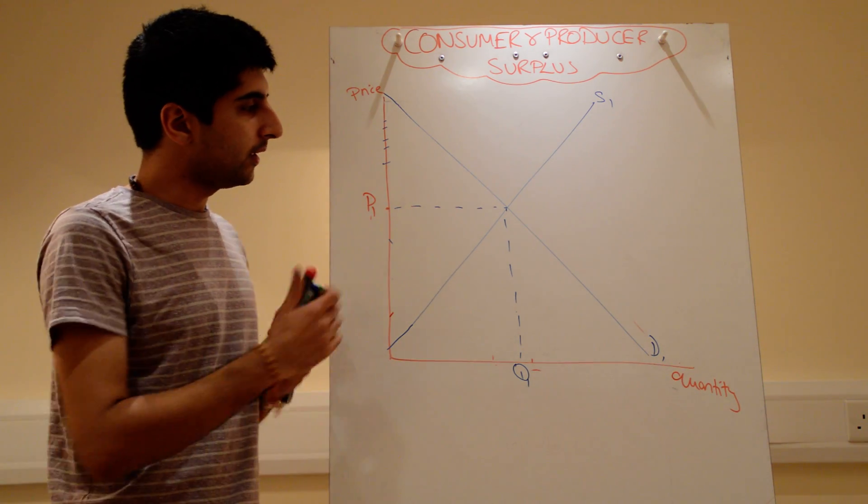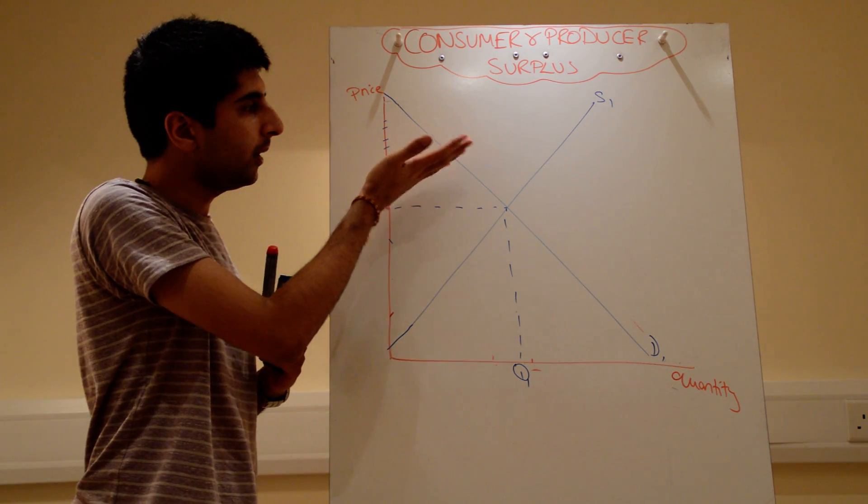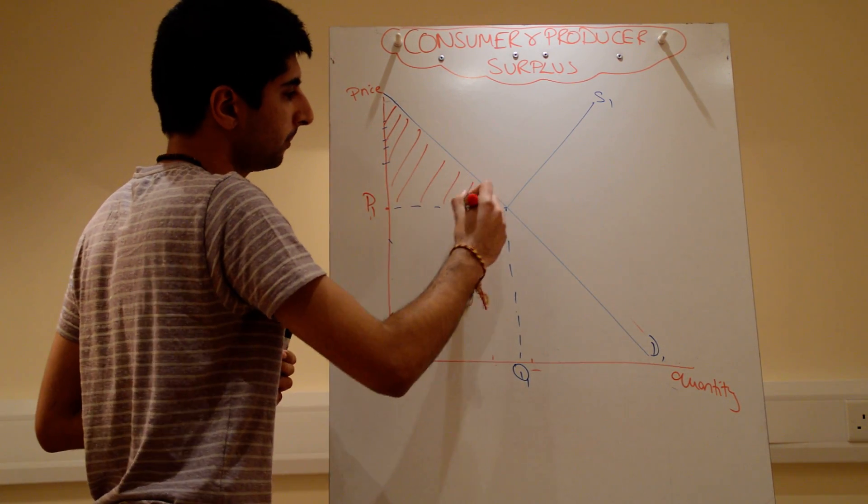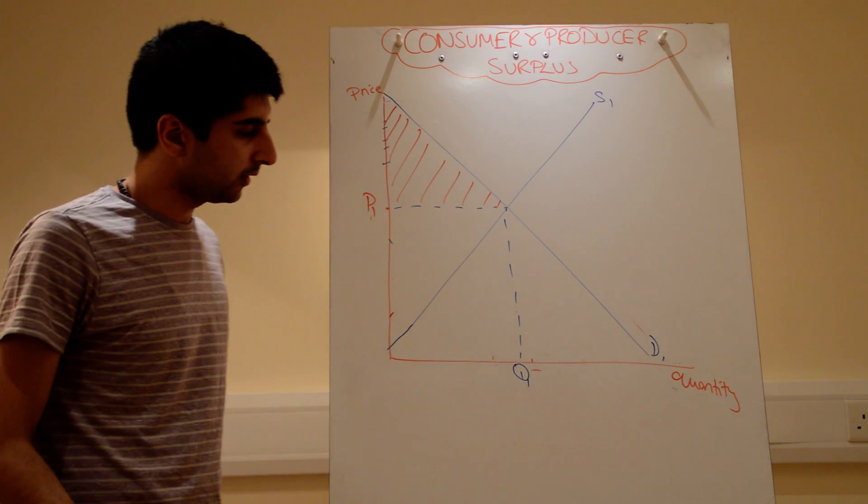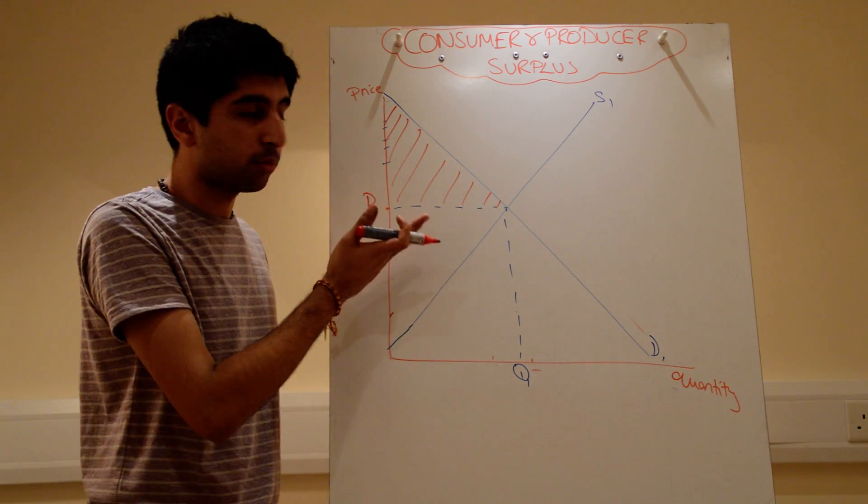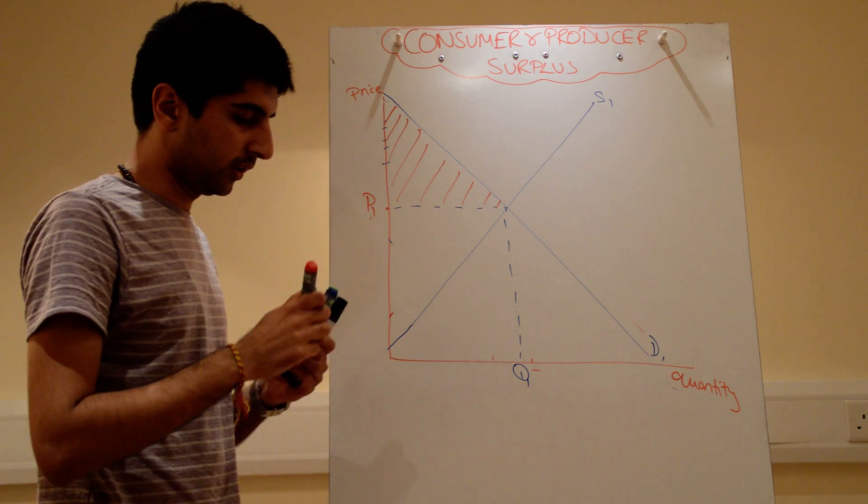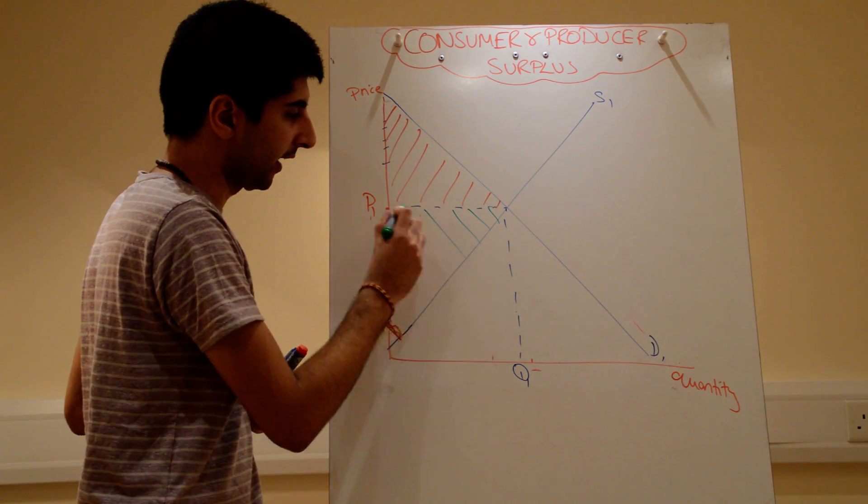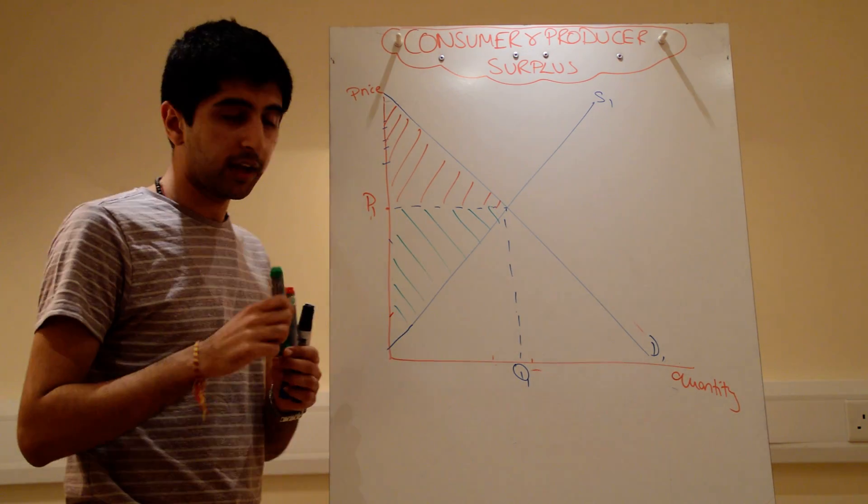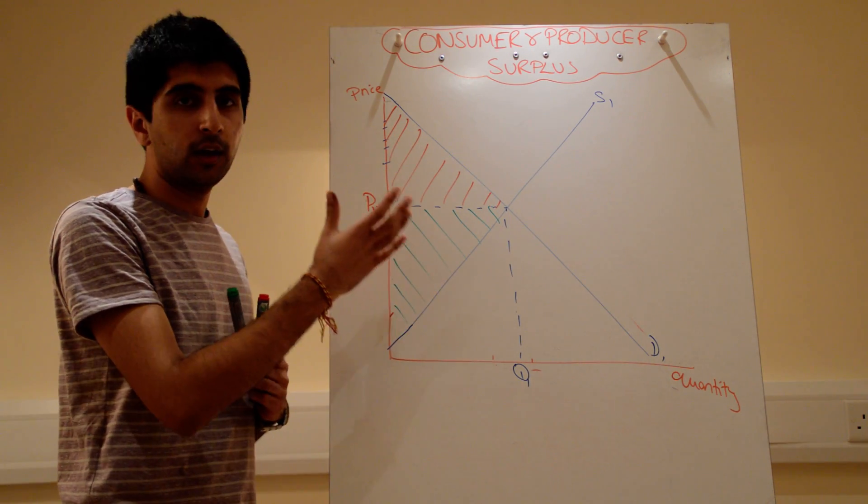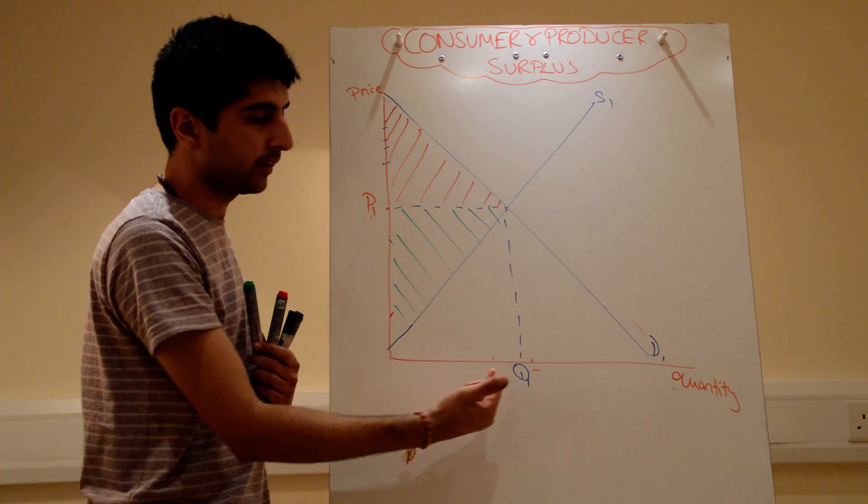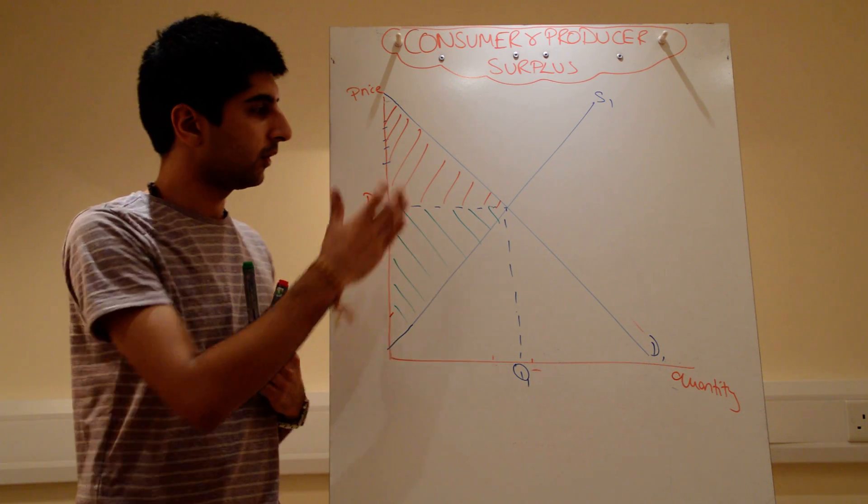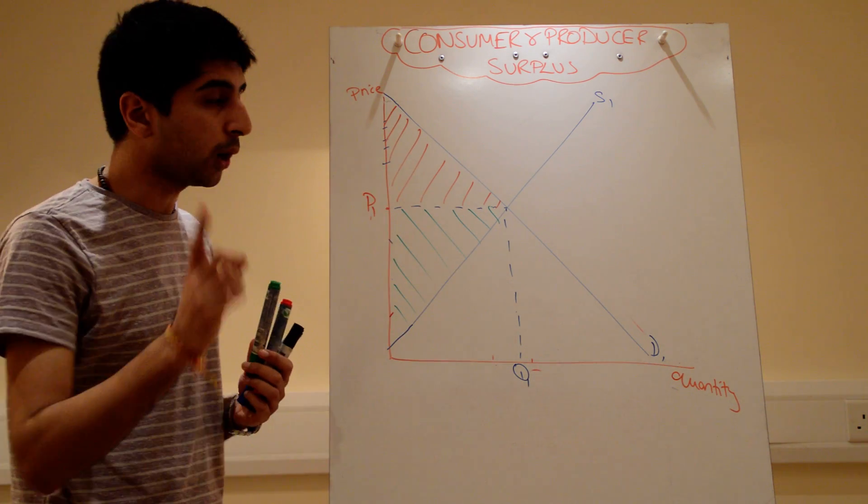So we know now that consumer surplus is the area above the price line but below the demand curve. Okay, very simply this shaded triangle there. And then the producer surplus is just the area beneath the price line but above the supply curve. Okay, we're doing different colors, doing green. So it's that area there. And that's how you show it. Okay, so if they ask you to show producer and consumer surplus on one diagram, okay, with equilibrium market price here, that's how you do it. Just pick out the respective areas, the triangles, okay, and shade them in like that. But don't stop there.